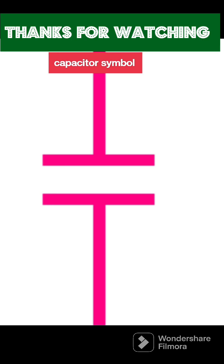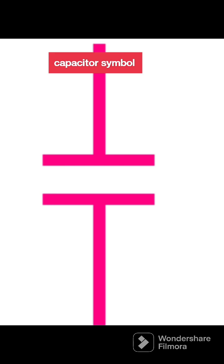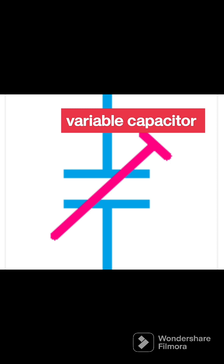When we see the capacitor symbol, we understand that the positive and negative terminals are separated by an air gap. What we see in the symbol is two plates separated by an insulator. This other symbol is the variable capacitor symbol — these variable capacitors are air gap capacitors, also called air capacitors.